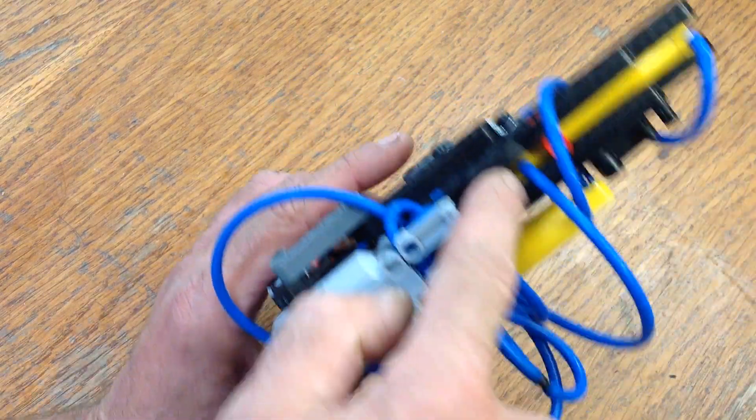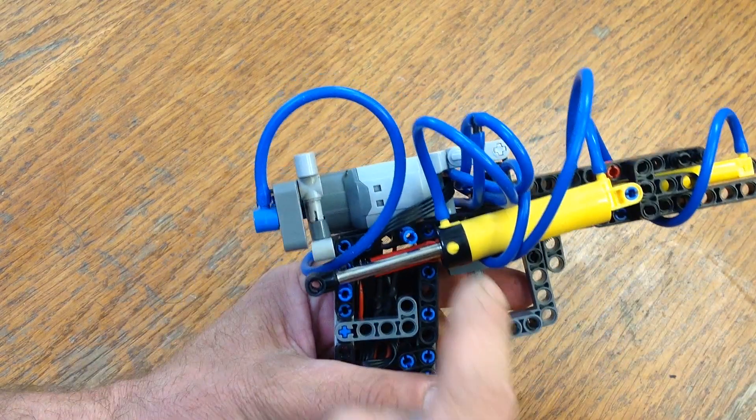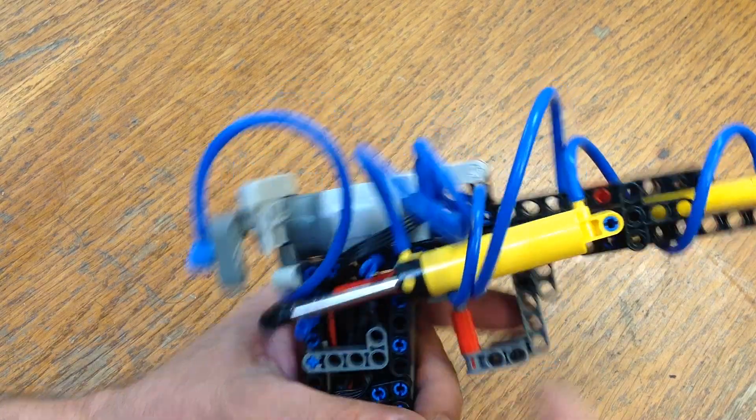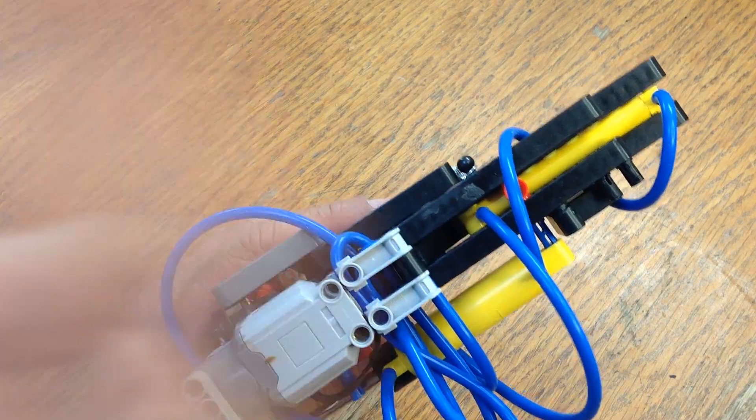And the valve connects to this longer thin piston right here. So when you run the pump, it will charge this piston up. And when you press this valve, the air will dump into the back of this piston, firing the gun.